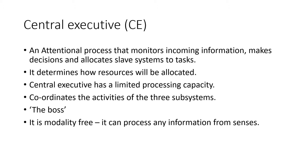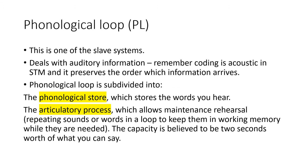The central executive can process any information from our senses. The first slave system is the phonological loop, which deals with auditory information - think phonetics. Coding is acoustic in short-term memory. The phonological loop preserves the order in which information arrives. It is subdivided into the phonological store, which stores the words you hear in order, and the articulatory process, which allows maintenance rehearsal by repeating sounds or words in a loop, keeping them in working memory while needed. Capacity is believed to be about two seconds' worth of speech - very limited.